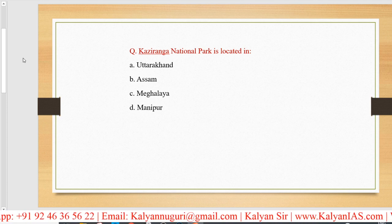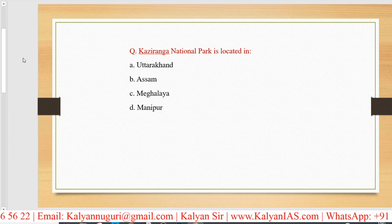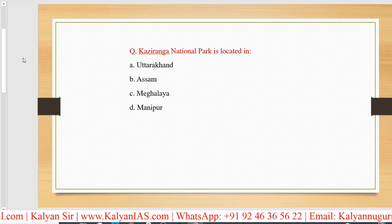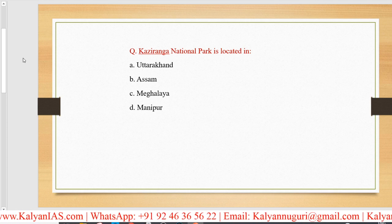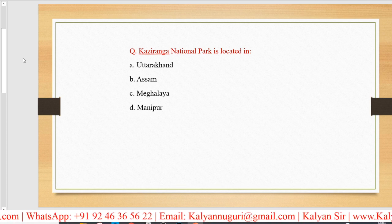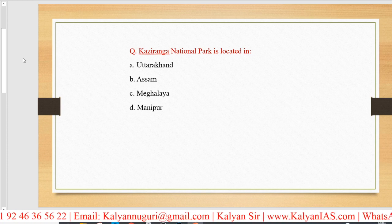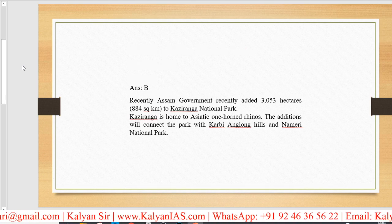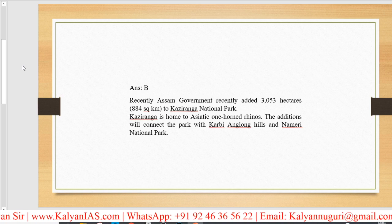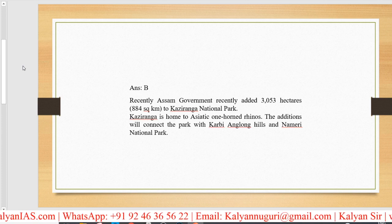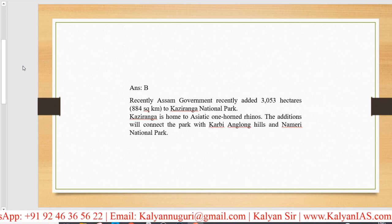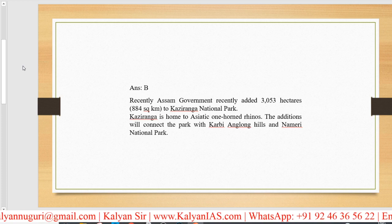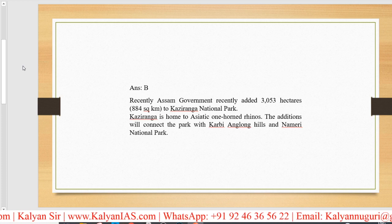Kaziranga National Park is located in Assam — a very famous one and everybody knows it. This is in the news because recently the Assam government added 3053 hectares to Kaziranga National Park, which is the reason it is in the news. This particular national park is home to Asiatic one-horned rhinos.